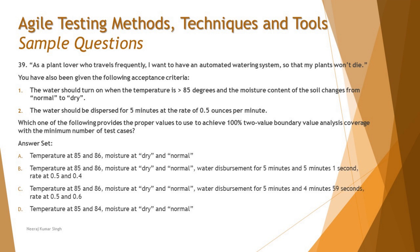This requires applying boundary value analysis. There are two types: two-point analysis, where you take two values on each boundary, and three-point analysis, where you take three values. The boundary here is temperature greater than 85 degrees. An important distinction: greater than 85 means 86 and above, whereas greater than or equal to 85 means 85 and above. Reading the operator carefully is critical — many people go wrong here.